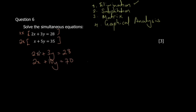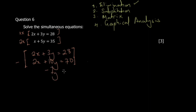Now that the x coefficients are matched, check whether the signs are the same or different. If the signs are the same, subtract to eliminate; if different, add. Here both are positive 2x, so we subtract: 2x − 2x = 0, and 3y − 10y = −7y.